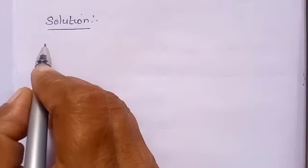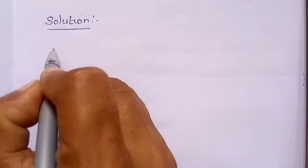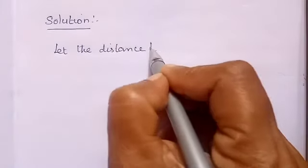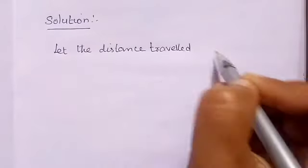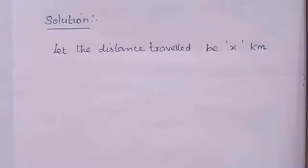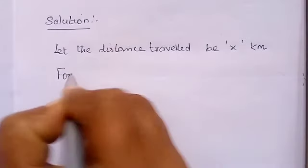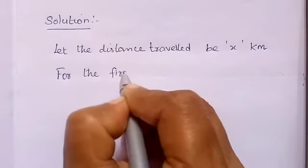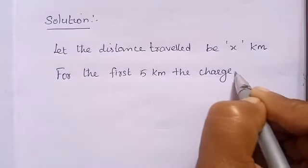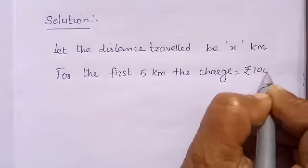First, we can assume the distance travelled. Let the distance travelled be x km. We assumed the total distance travelled equal to x km. For the first 5 km, the charge equal to Rs. 100. This is the fixed charge.